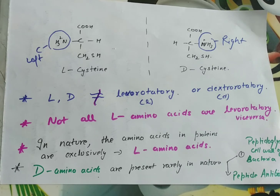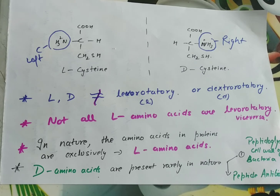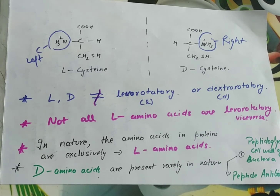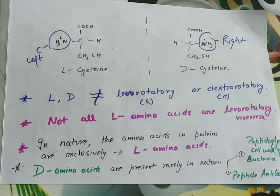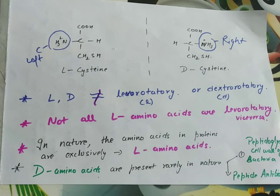To summarize the DL system: if the amino group is present on the left side, then it is the L form; if it is present on the right side, it is the D form. This nomenclature is based on the absolute configuration of glyceraldehyde. Thank you.